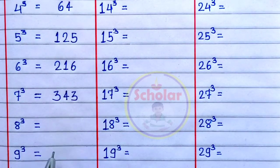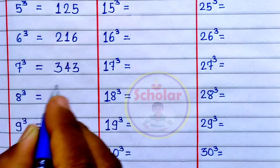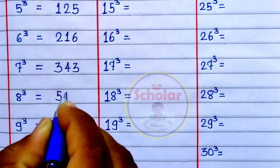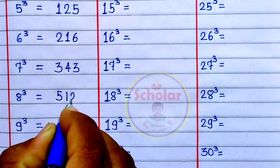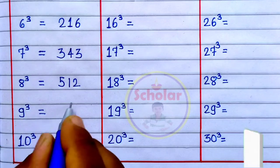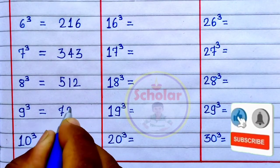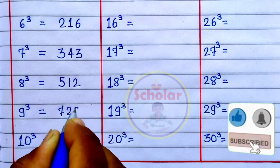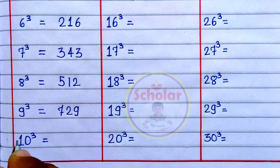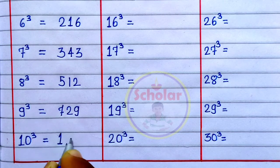Cube of 8 is 512. Cube of 9 is 729. Cube of 10 is 1000.